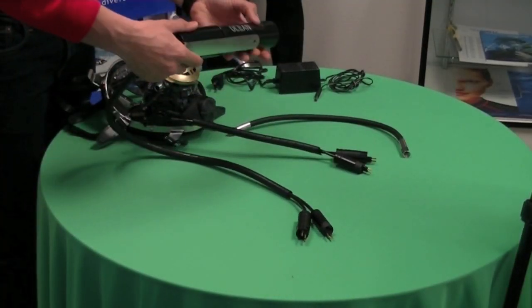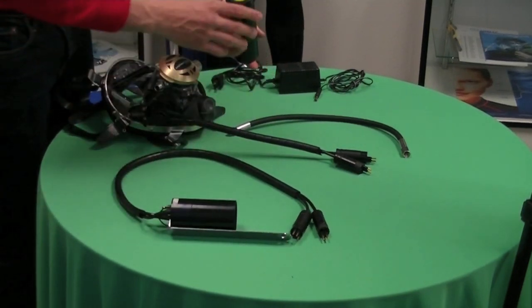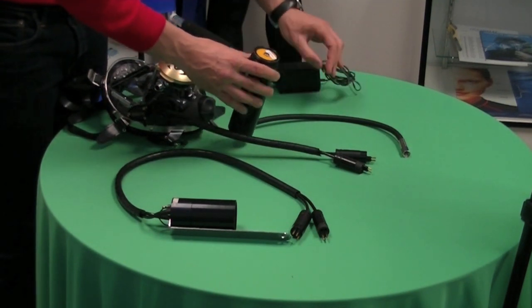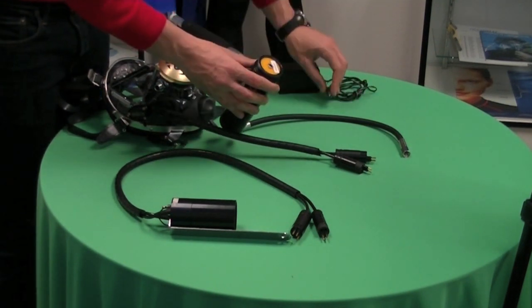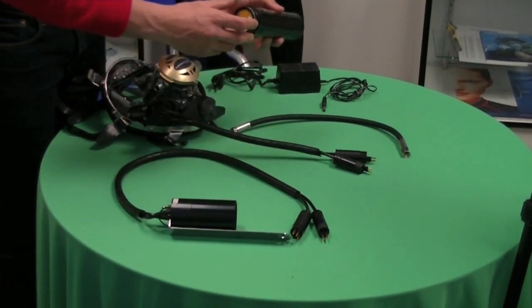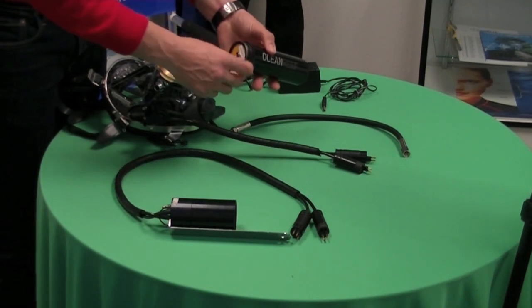To begin using your SDVL system, first you will charge the battery. Unscrew the battery from the battery pack and plug it into the charger. The red light will signal charging. Your battery will be fully charged when the green light is showing. You can then reinstall the battery by threading it into the battery pack.